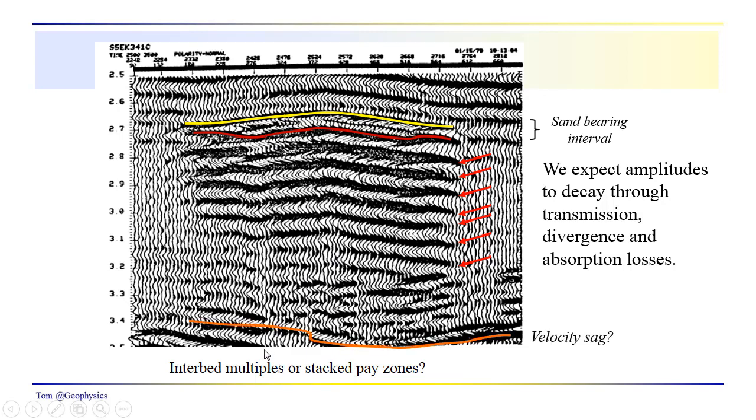Well, this would be an interpretation that we see a velocity sag down here. We have a low velocity interval up here. It produces a sag in some of the deeper reflections that we see across the bottom of the seismic display. So giving kind of justifying the interpretation that this might actually be a low velocity sand. How many low velocity sands you have here, that's a question mark. These could just be primarily multiples, interbed multiples back and forth in this layer.